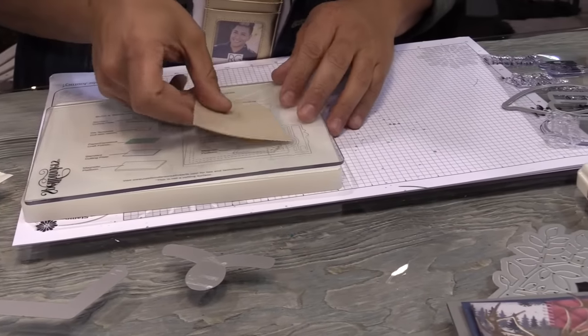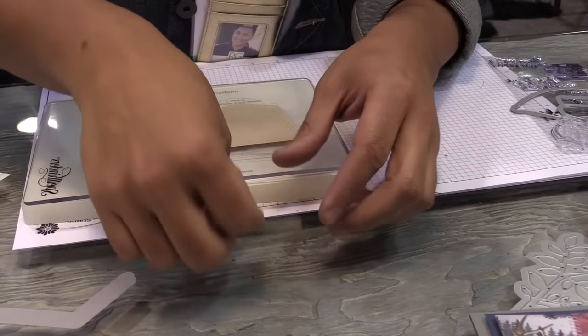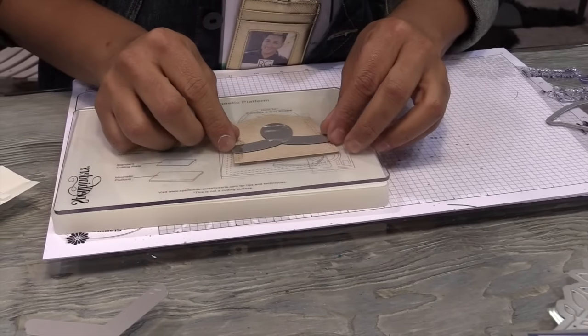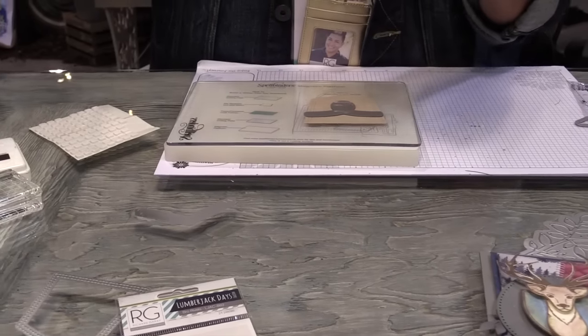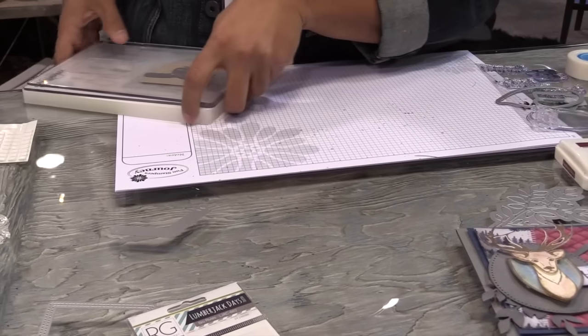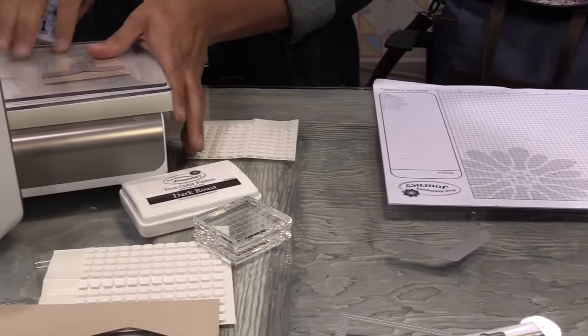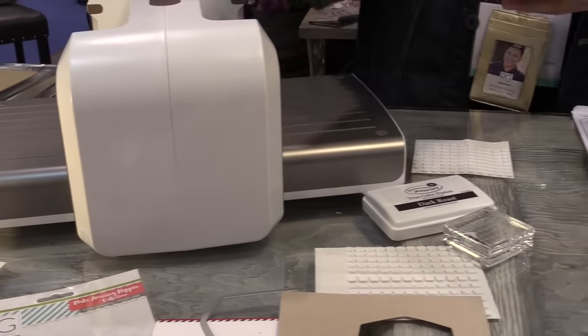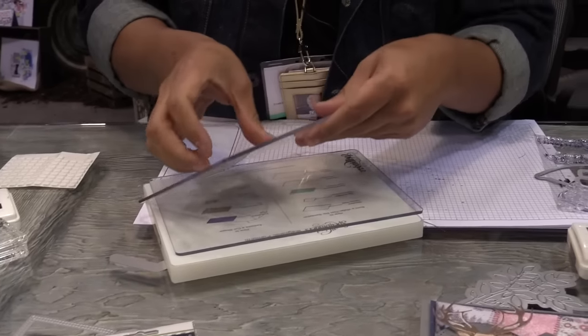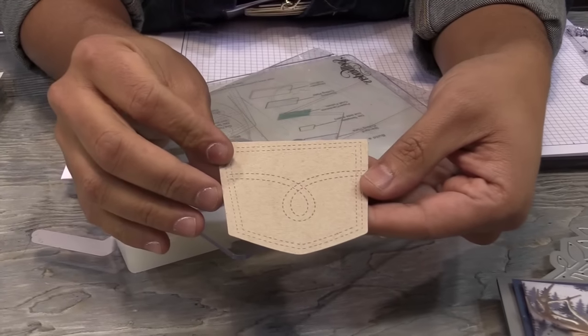So simply bring it back to my die cut machine. I'm going to choose this little swirl of a stitch, kind of position it where I want it here. Bring back my cut plate and run it through one more time through my die cut machine. And then it's going to create that fun decorative element onto my die cut cardstock.